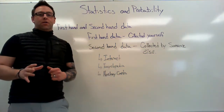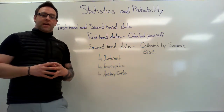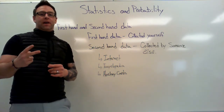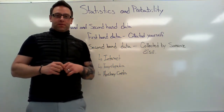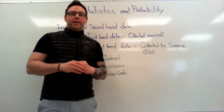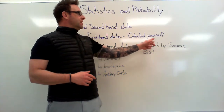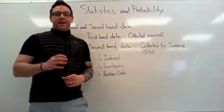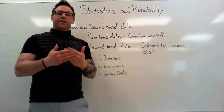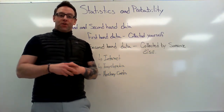The first thing we're going to talk about is collecting data. The important thing to understand is that there are two types of data that we're going to use for our purposes. The first type is called first-hand data. First-hand data is data that you collect yourself — my own hand, I am collecting data myself. That's first-hand data.